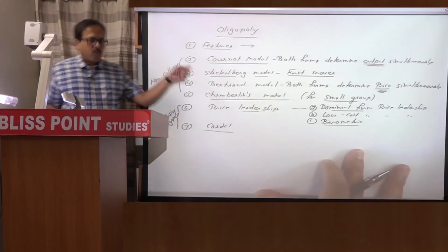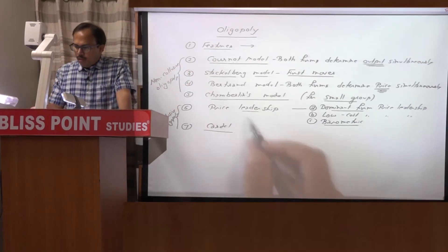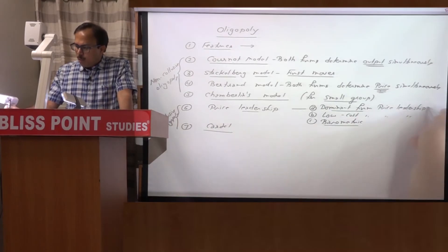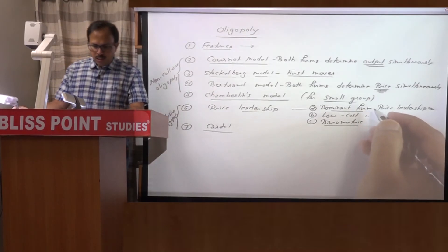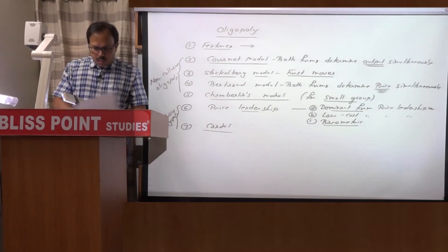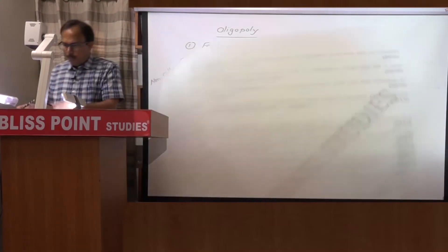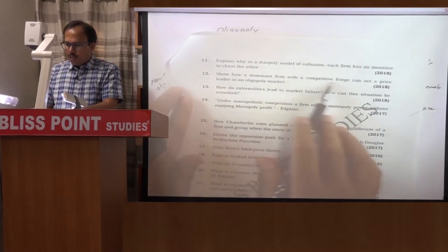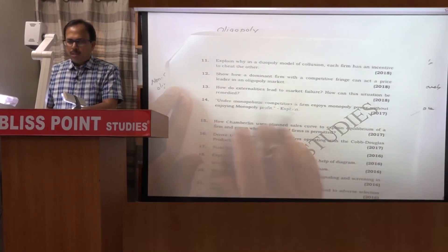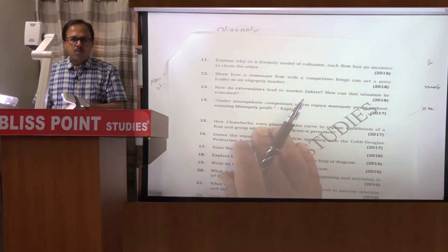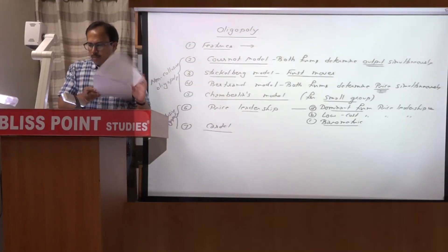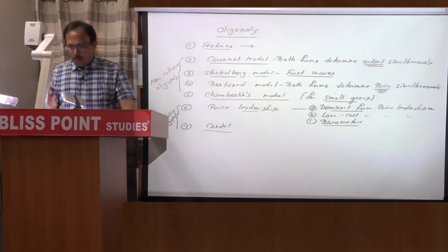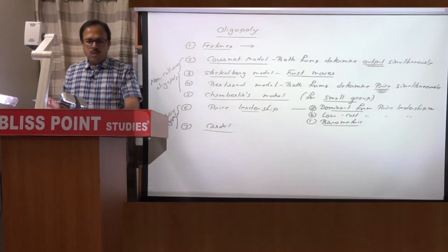Within oligopoly there are two parts: non-collusive oligopoly and collusive oligopoly. A frequently asked question is on dominant firm price leadership — asked two or three times. In 2018, question number 12 asked: how can a dominant firm with a competitive fringe act as the price leader in an oligopoly market? There is a dominant firm as leader and fringe refers to some small firms. Price leadership and cartel are the two topics in the collusive oligopoly section.